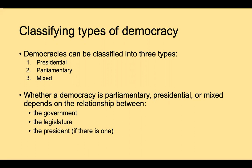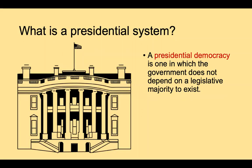When we talk about a democracy, we're talking about key institutions of the state involved in decision making — the legislature and the government of the executive. In these different institutions of the democratic state, they may have different relationships to each other depending upon the type of democratic government. This is where we begin to distinguish between presidential, parliamentary, and mixed democratic regimes. The first concept we're going to explore is the concept of a presidential democracy.